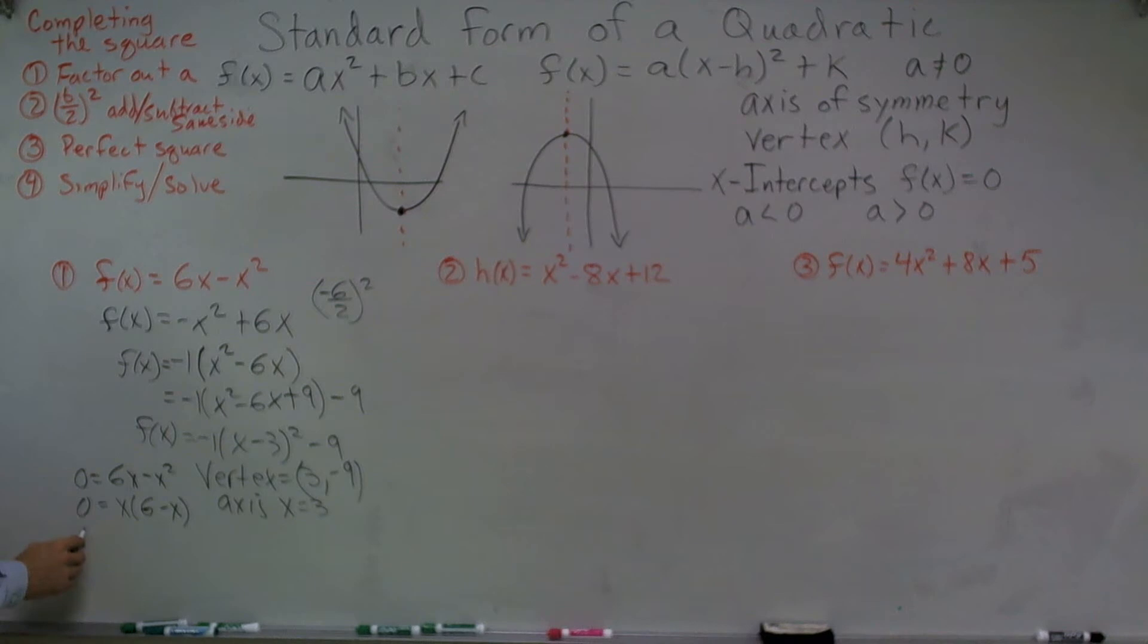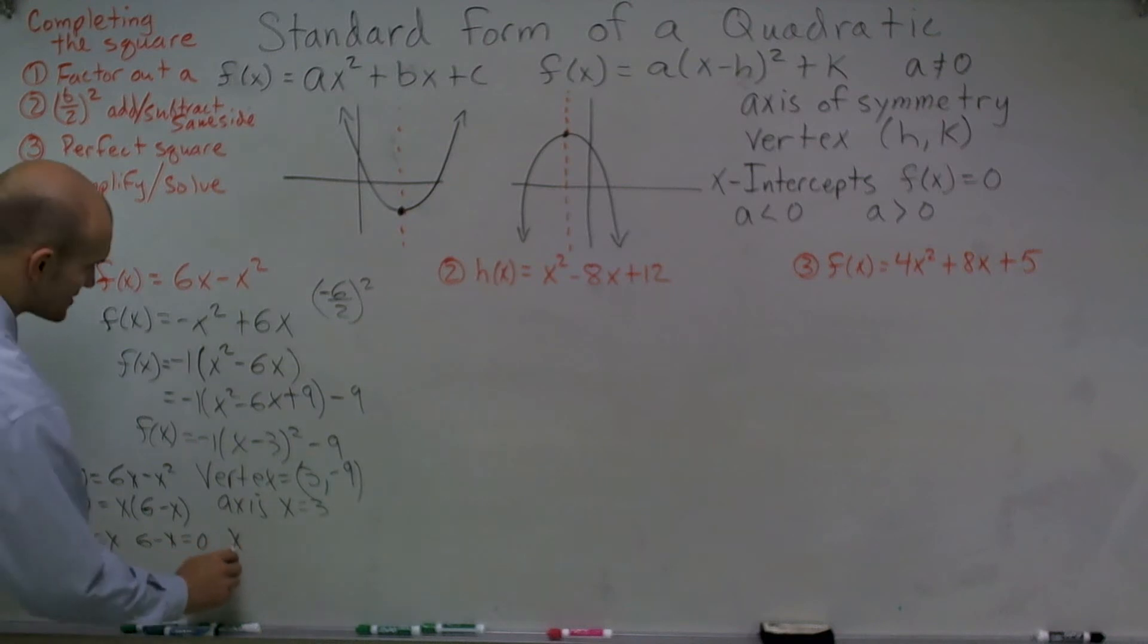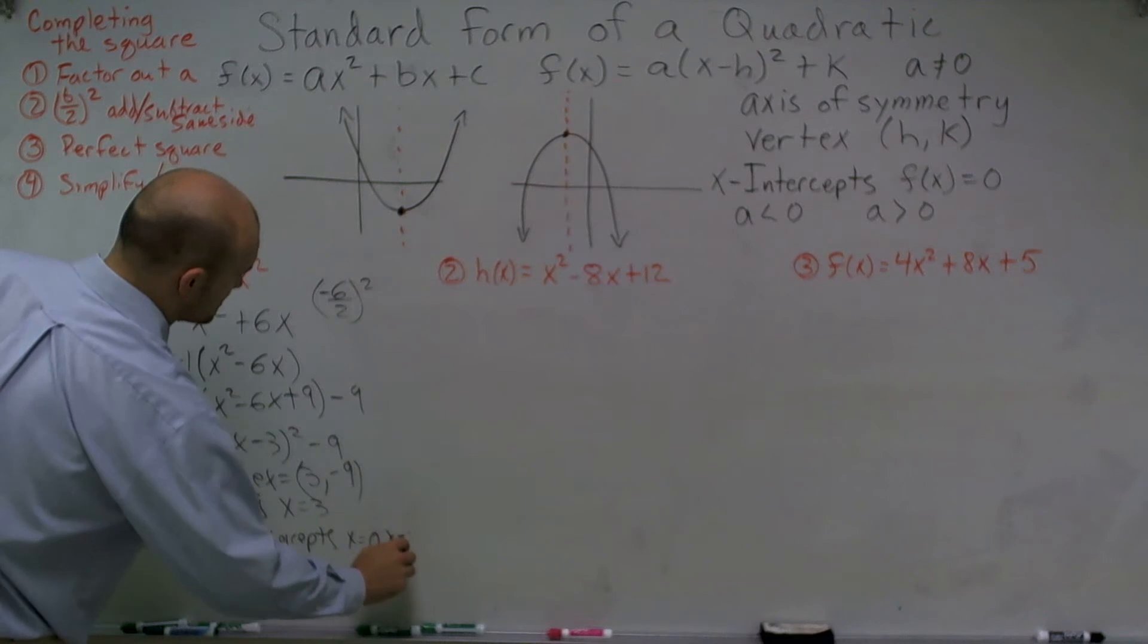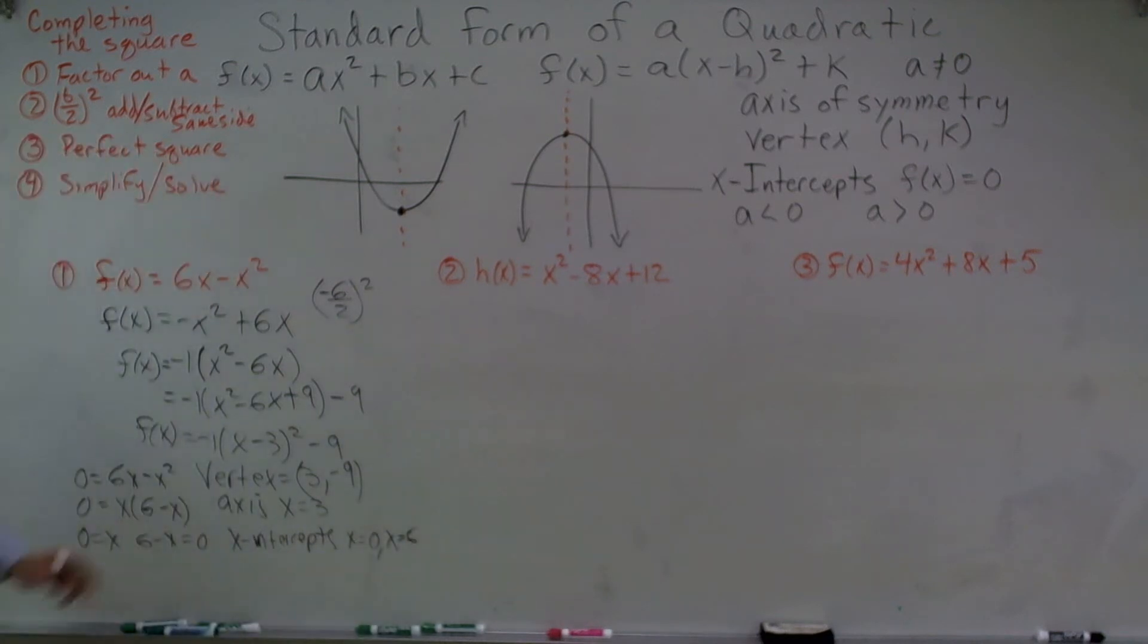Then I can set these both equal to 0. So 0 = x and 6 - x = 0. Therefore, my x-intercepts are, when I solve for x here, I get x = 0 and x = 6. Done.